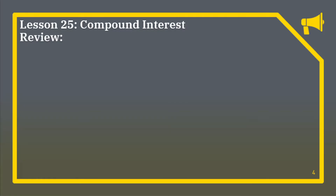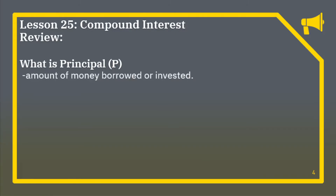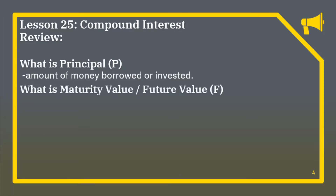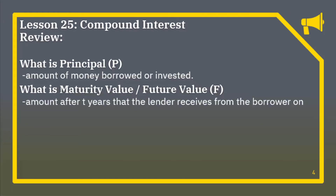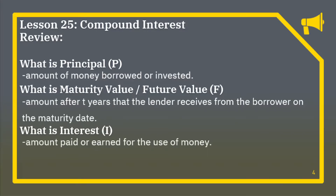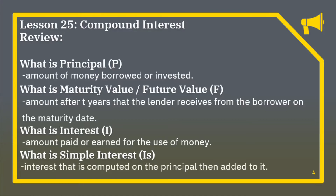Let's have a review of our previous lesson. What is the Principal? It is the amount of money borrowed or invested. What is maturity value or future value? It is the amount after a period that the lender receives from the borrower on the maturity date. What is interest? It is the amount paid or earned for the use of money. What is simple interest? It is interest that is computed on the principal, then added to it.